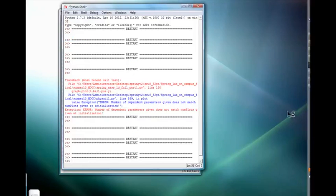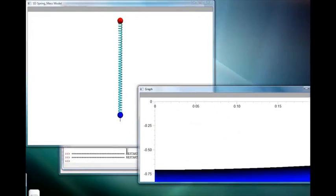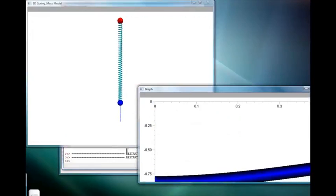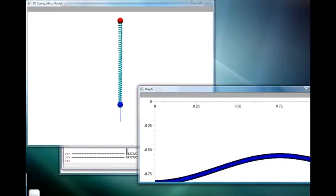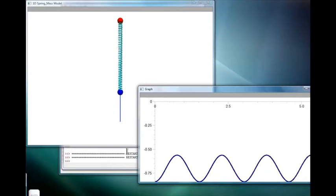We'll discuss how to make a direct comparison to the observations in our next lecture but for now we'll close by adding one more feature. Let's put in two arrows to visualize the spring force and the weight force. To do this find these two sets of code and uncomment the lines so that they look like this.